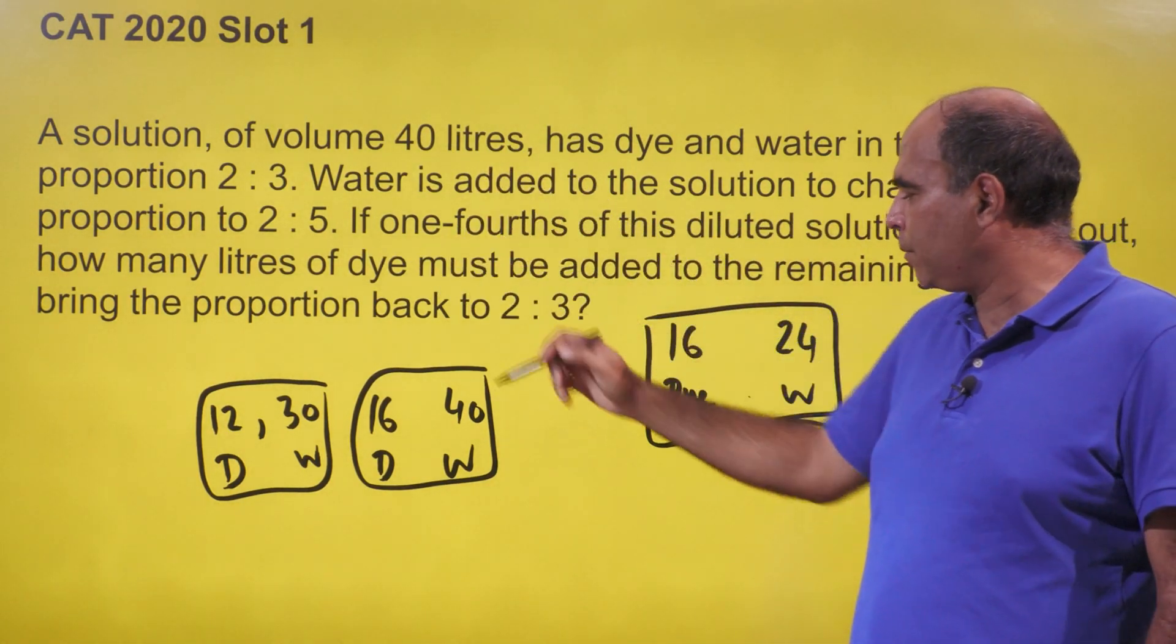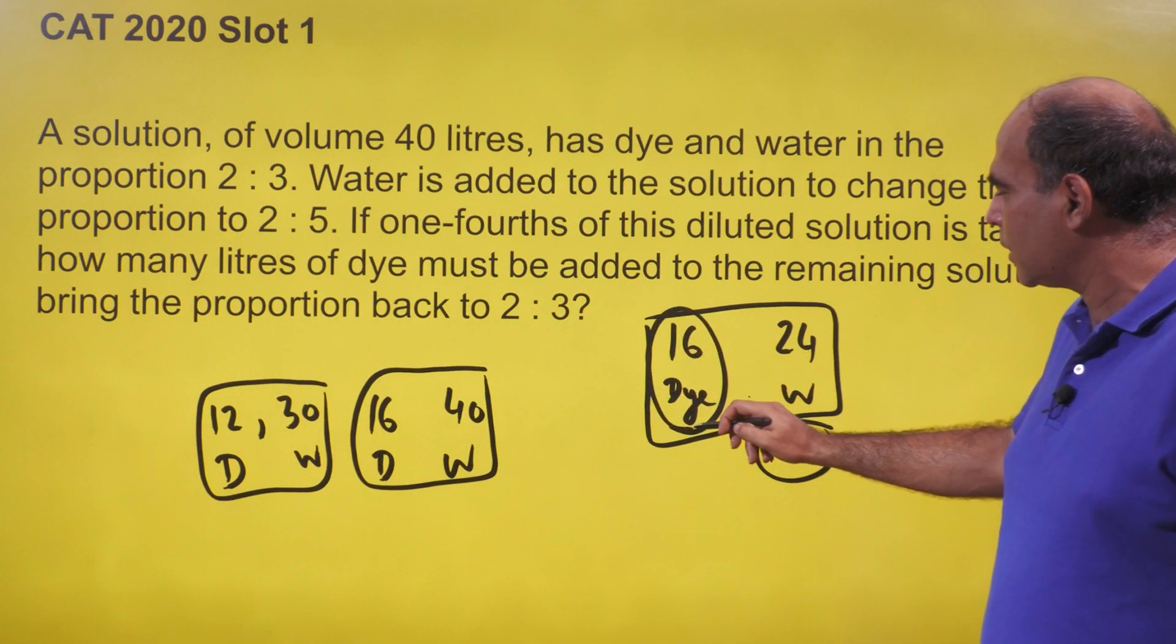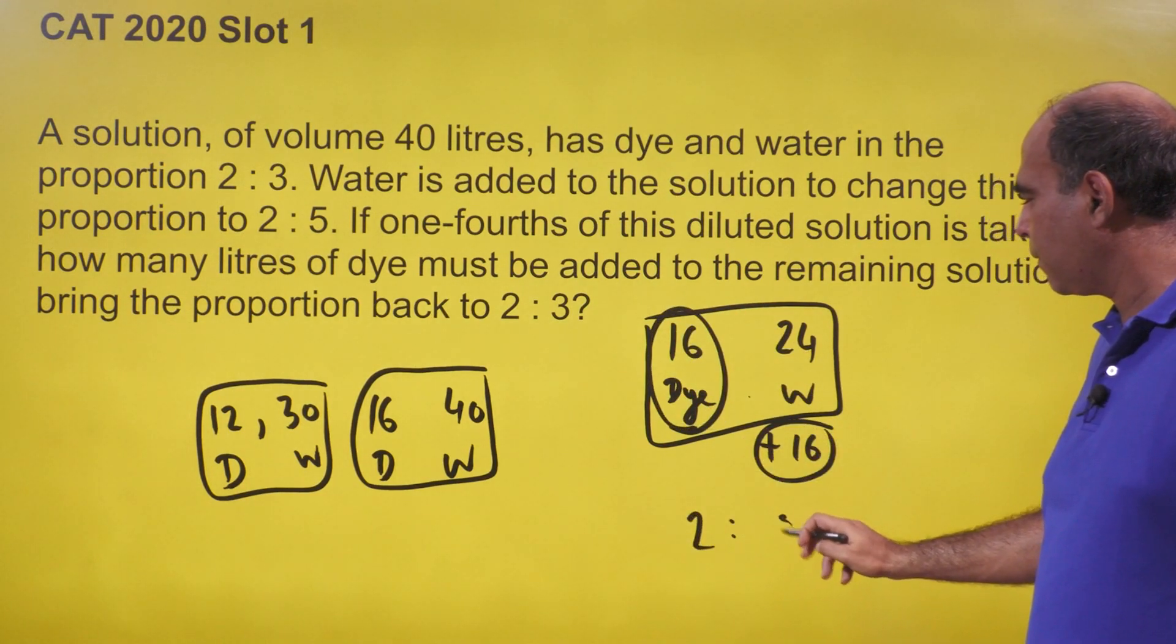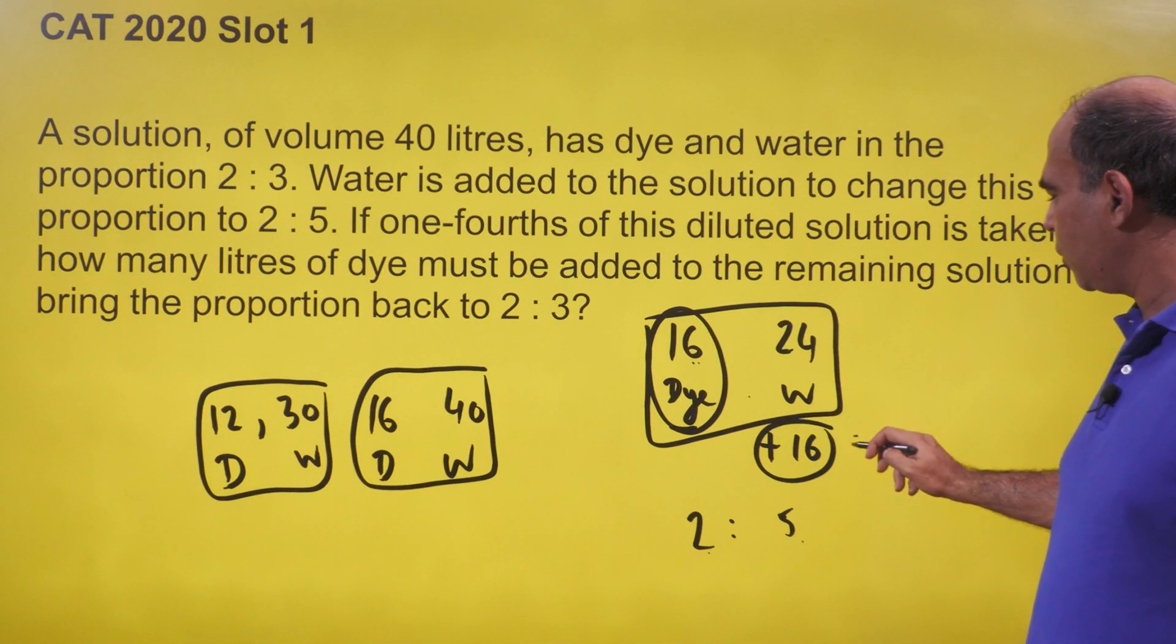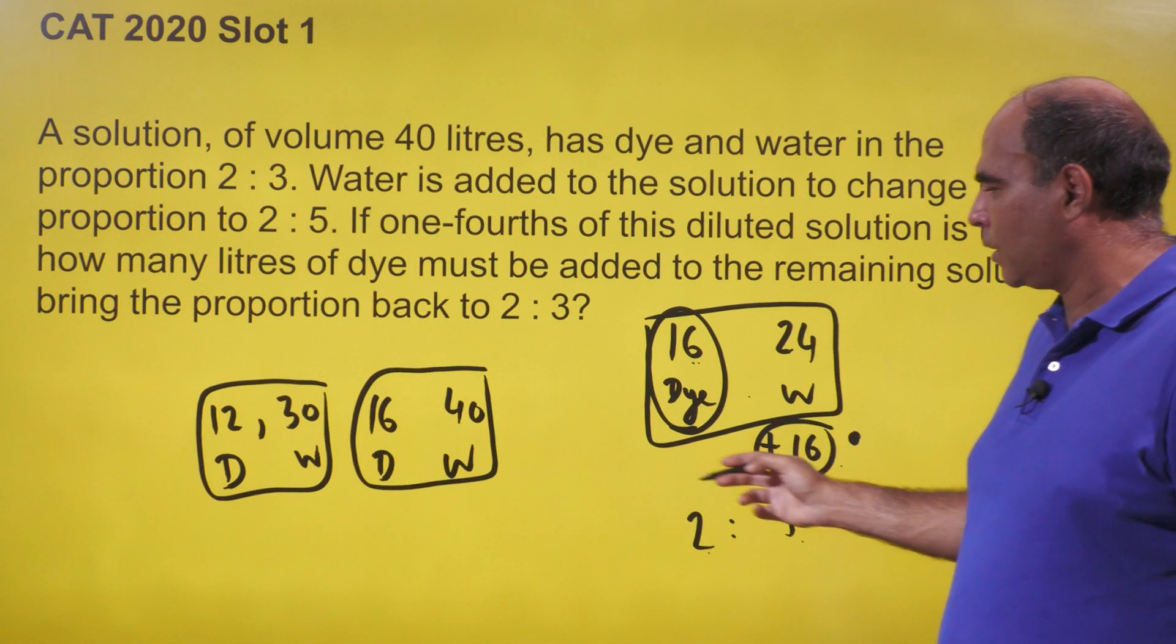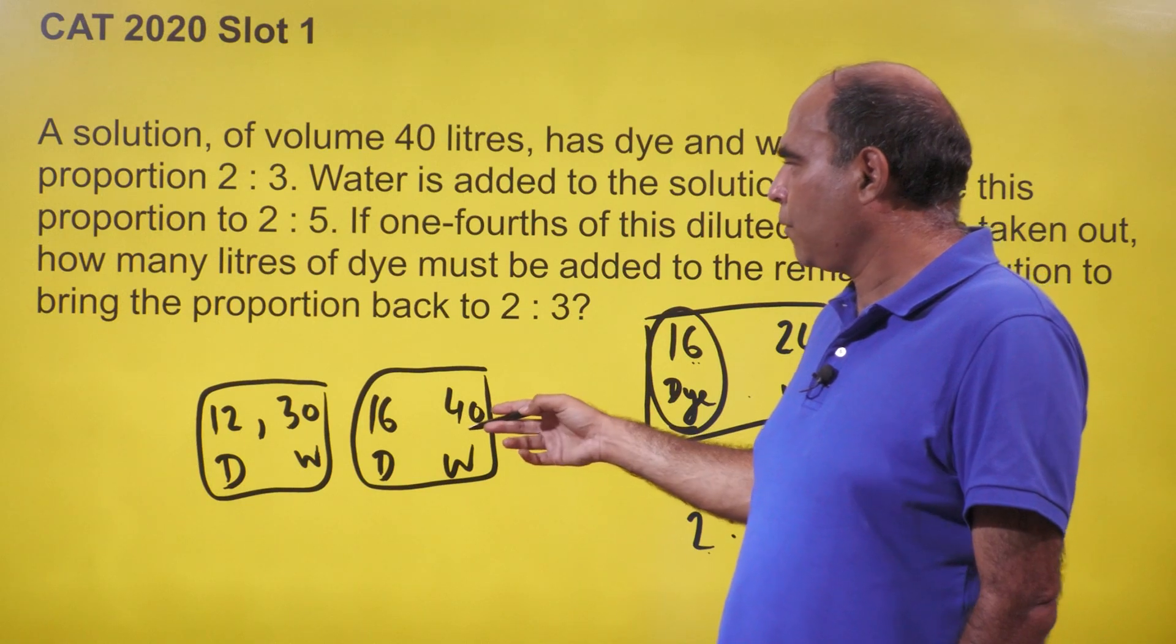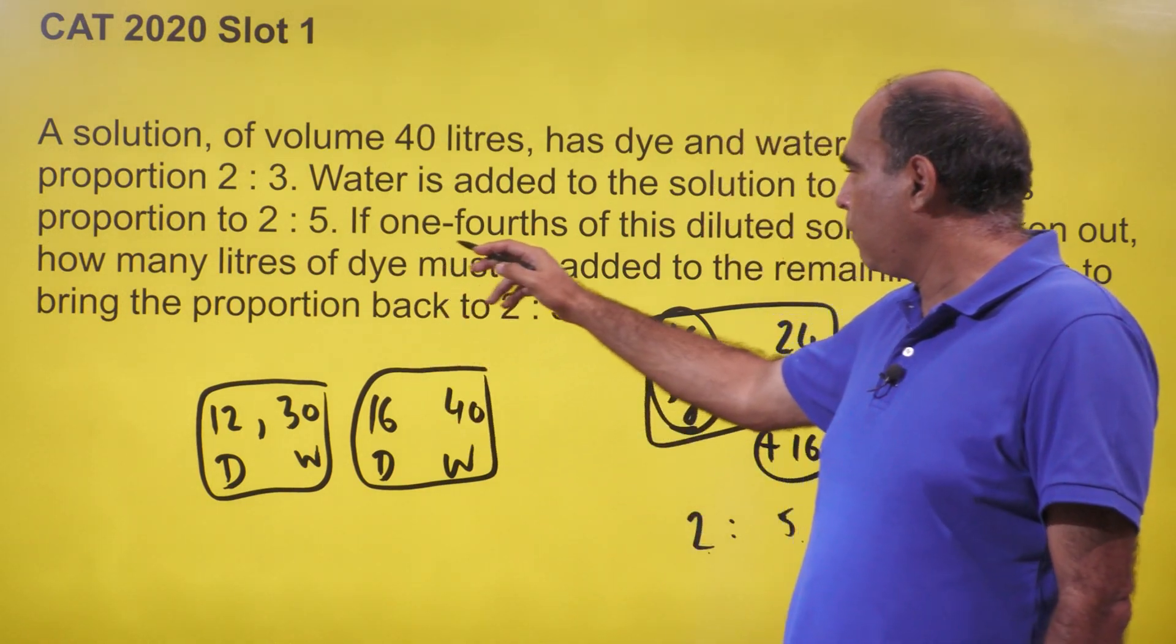That means the dye is not being added, so dye remains 16. To become 2 is to 5, the dye is 16 and that's 2, so 5 has to become 40. That means you're adding 16 liters of water. So now you've got dye 16, water 40. Halfway through the problem.